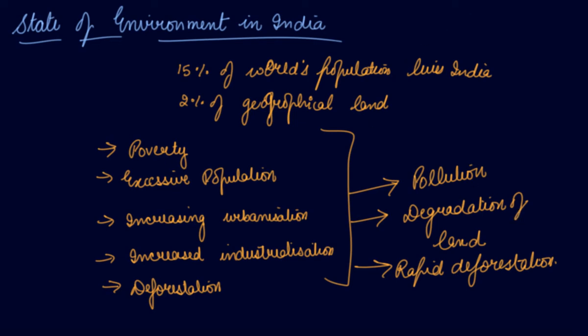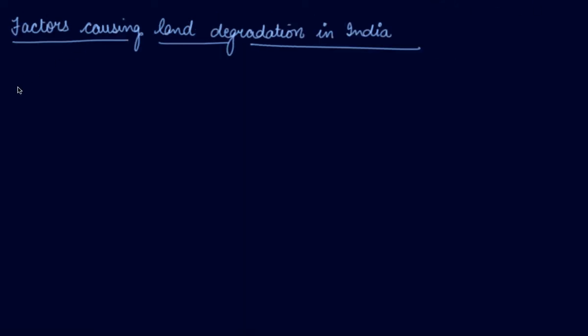What are the principal factors that are contributing to land degradation in India? Factors causing land degradation in India: Land degradation in India majorly is due to soil erosion. First is loss of vegetation due to desertification and deforestation.